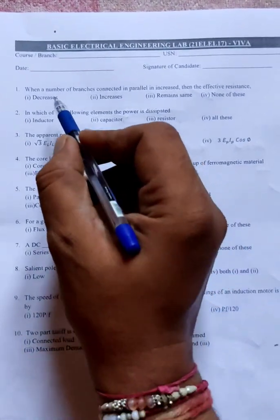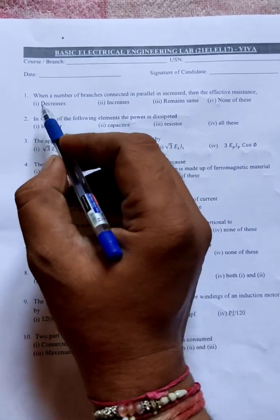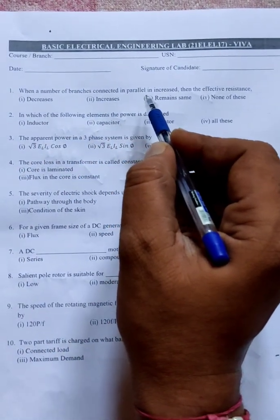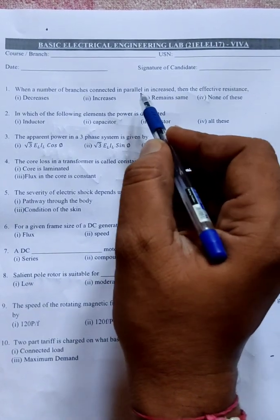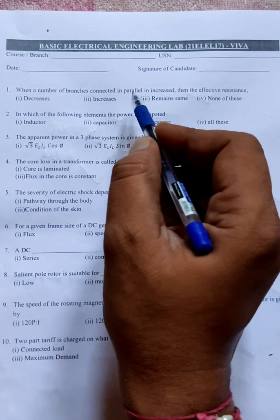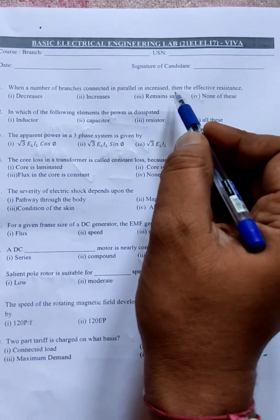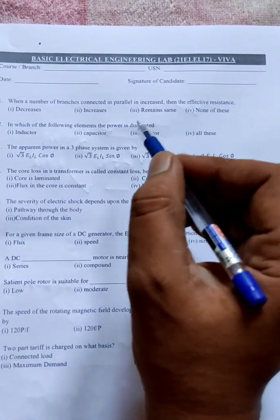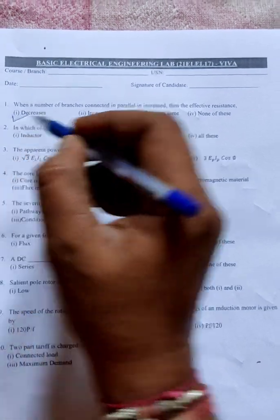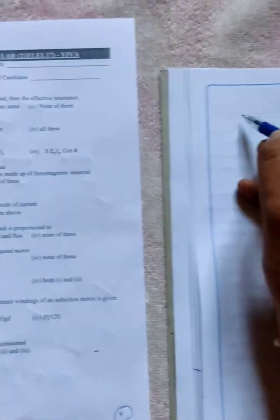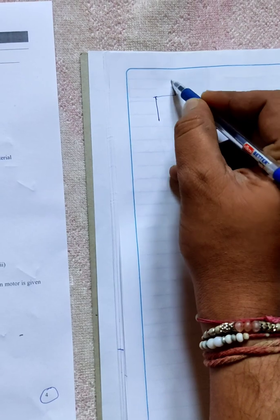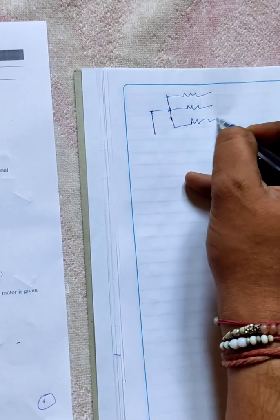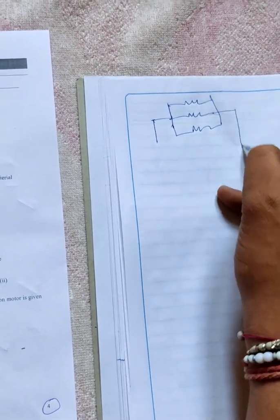Let me start. First question: when a number of branches connected in parallel is increased, then the effective resistance decreases, increases, remain same, or none of this? So effective resistance decreases. See, understanding is important, simply copying the solution from my side is going to get caught in front of your college examiner.